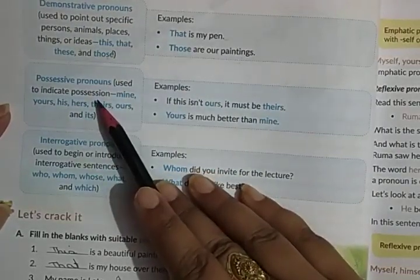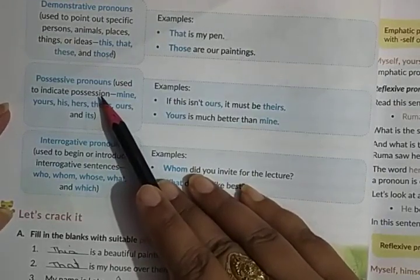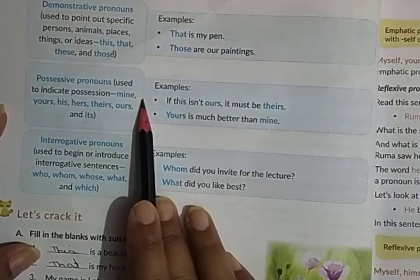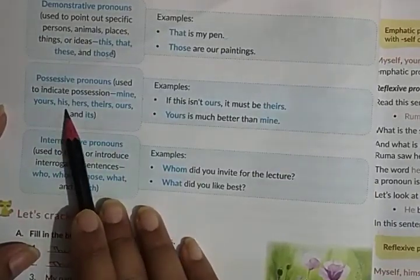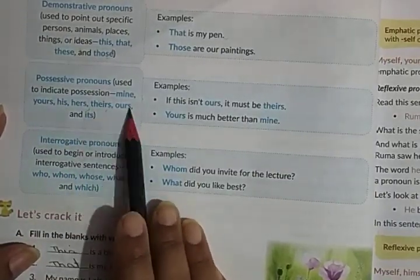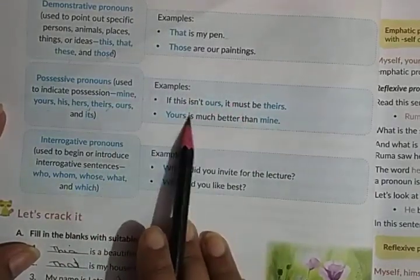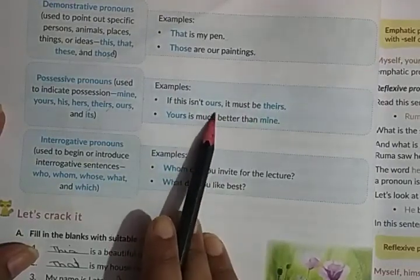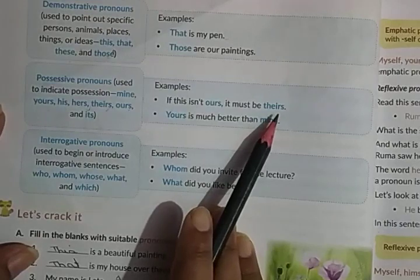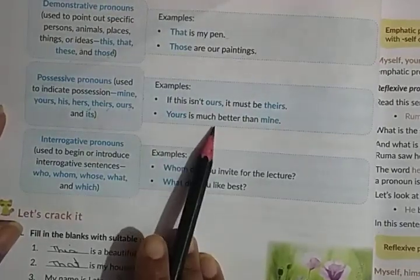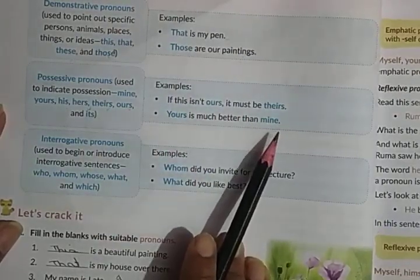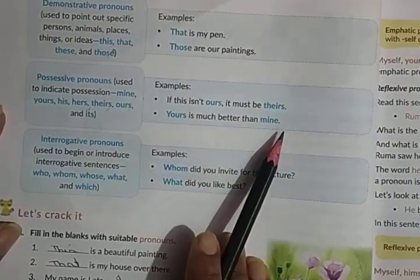Possessive pronouns are used to indicate possession — that is, to whom something belongs. Examples: mine, yours, his, hers, theirs, ours, and its. For example: 'If this isn't ours, it must be theirs' — here 'ours' and 'theirs' are possessive pronouns. 'Yours is much better than mine' — both 'yours' and 'mine' are possessive pronouns because they both indicate possession.